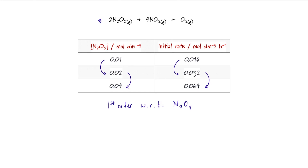Since I know the order of reaction, I can write a rate equation: rate equals k, the rate constant, multiplied by [N2O5]. I could raise that to the power of 1 because it's first order, but generally we don't bother. Since we have experimental results, we can determine a value for k. I'm going to pick the middle set of results.